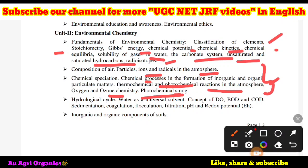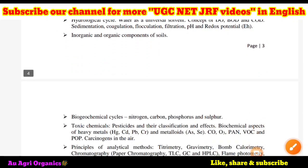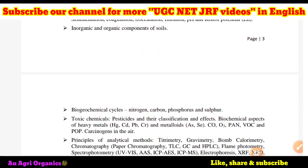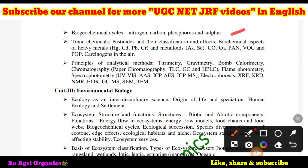Further topics include oxygen and ozone chemistry, photochemical smog, and the hydrological cycle. Water as a universal solvent, DO (dissolved oxygen), BOD (biological oxygen demand), COD (chemical oxygen demand), sedimentation, coagulation, flocculation, filtration, pH, and redox potential — all studied in UG environmental sciences. Inorganic and organic components of soil, physical, chemical and biological properties from soil science, and biogeochemical cycles — nitrogen, carbon, phosphorus, sulfur — from microbiology and soil science are also covered.